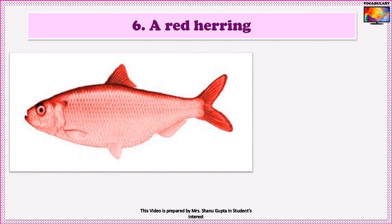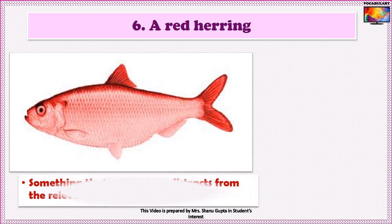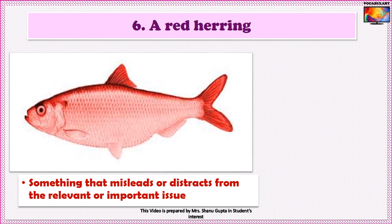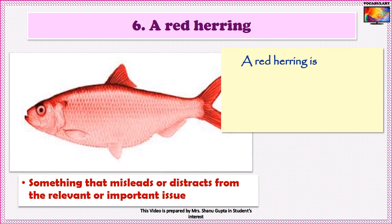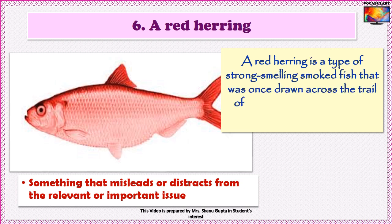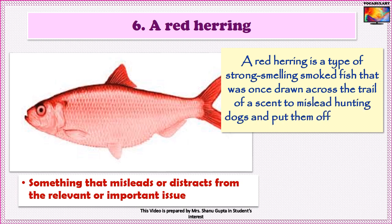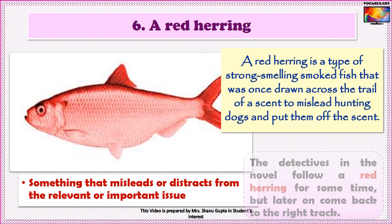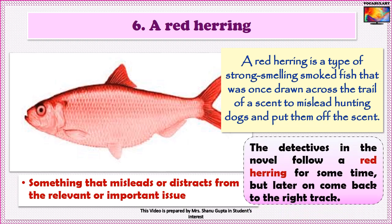Idiom number 6 is Red Herring. The phrase is used to refer to something that misleads or distracts from the relevant or important issue. The idiom derives from the fact that a red herring is a type of strong-smelling smoked fish that was once drawn across the trail of a scent to mislead hunting dogs. An example: The detectives in the novel follow a red herring for some time but later come back to the right track.